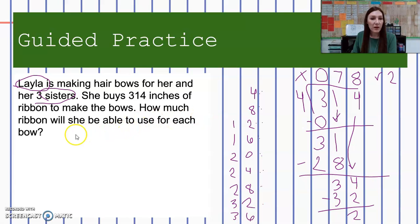This means that Layla can use 78 inches per bow. But what are we going to do with this last two inches? Let's draw a picture to see what this is going to look like.